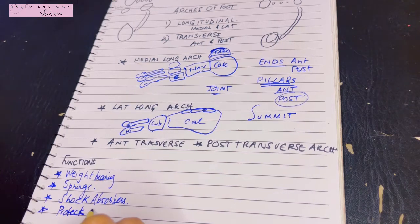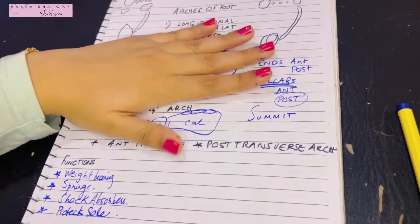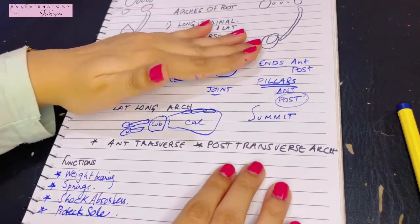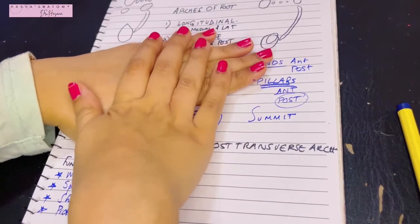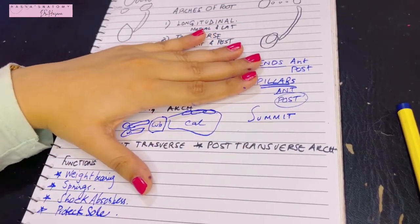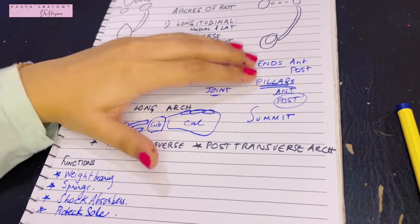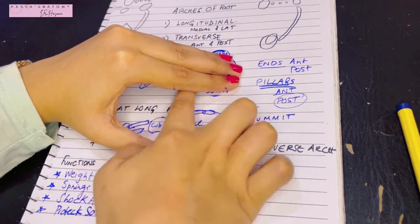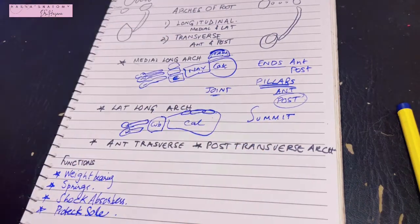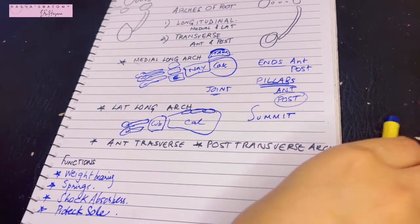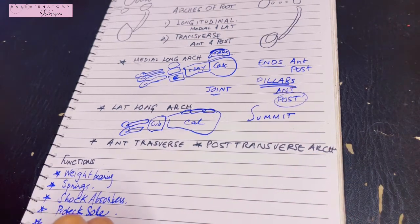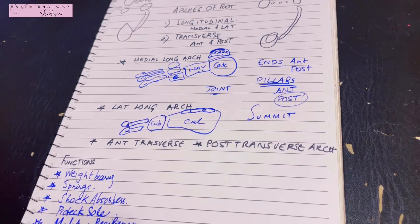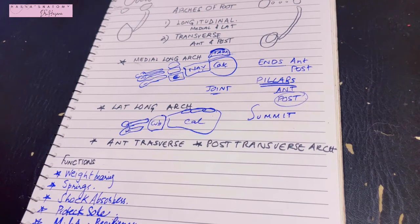The fourth function is that the arches protect the soft tissues of the sole. If the foot were flat, the nerves and arteries passing through would get compressed under the pressure of your entire body weight. The arch provides space so the nerves and vessels are not compressed. Finally, the medial longitudinal arch provides resiliency to the foot, while the lateral longitudinal arch gives rigidity to the foot.